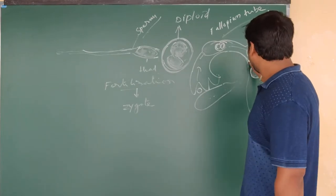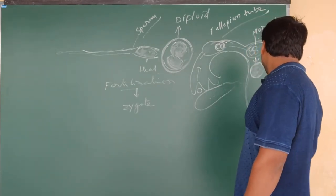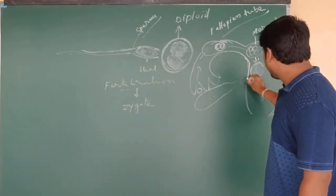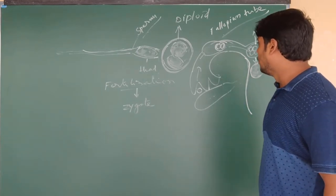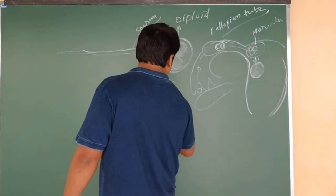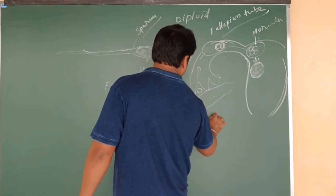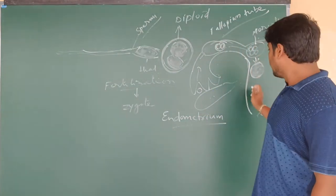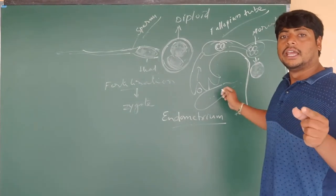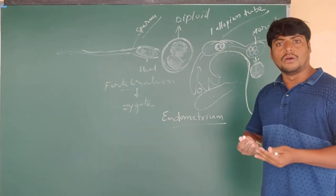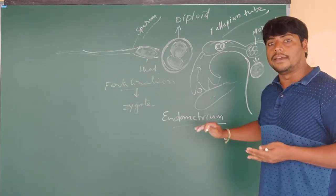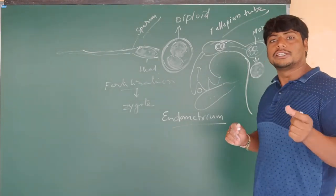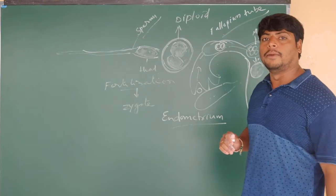If you observe the structure of the uterus, it is made up of a triple membrane structure, consisting of three membranes. The inner membrane is called the endometrium. When the zygote is collected into the uterus, the endometrium becomes thicker to bear the weight of the fetus — the growing baby — and to supply nutrients.